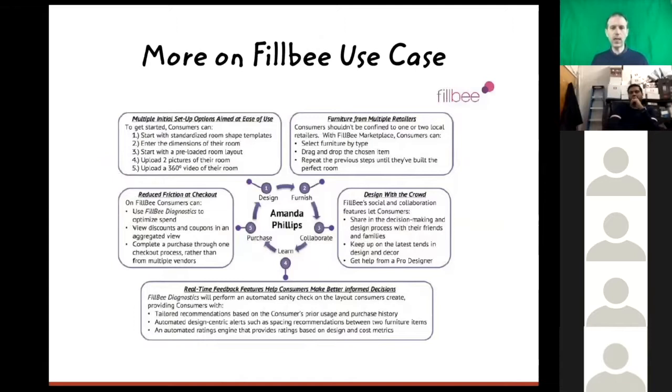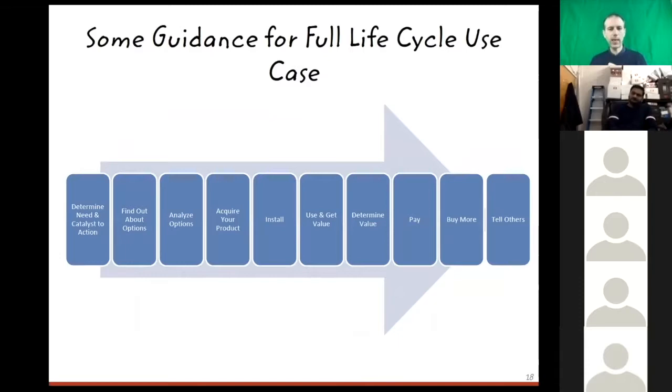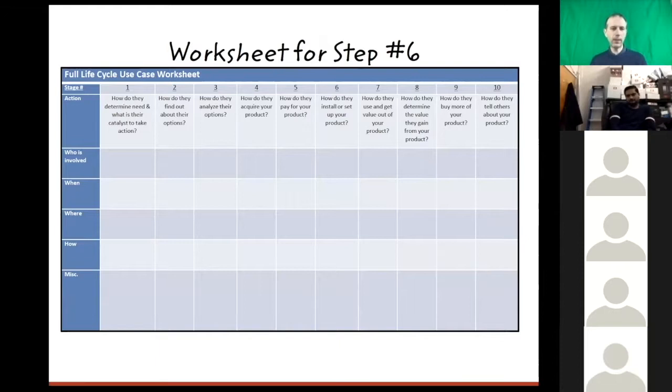Here's a worksheet which you can use, this is from the Disciplined Entrepreneurship workbook. This is pretty much looking at those 10 steps on the slide we had. So for each of those 10 steps: who's involved, when does it happen, where does it happen?